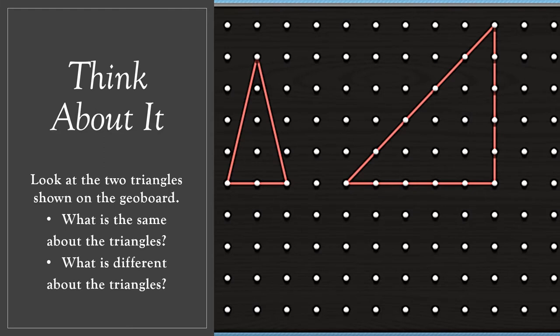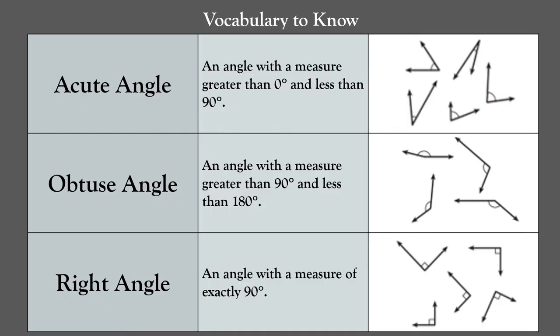Now let's get our brain thinking about triangles. I want you to look at the two triangles shown on the geo board. What is the same about the triangles? What is different about the triangles? Take some time to tell somebody at your house what's the same and what's different.